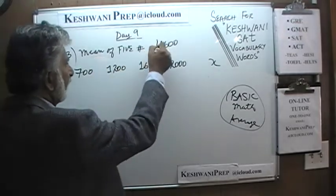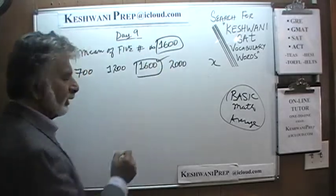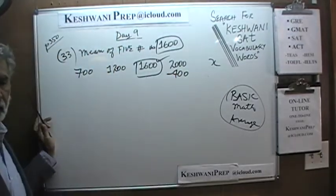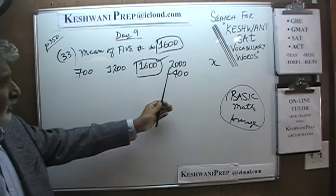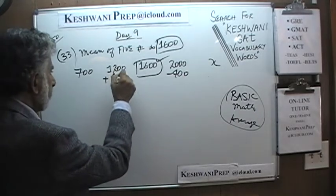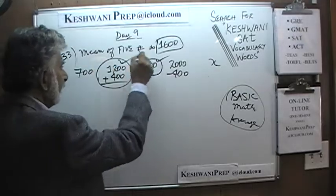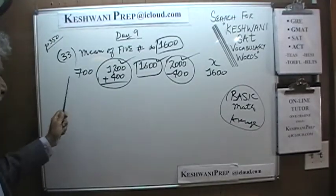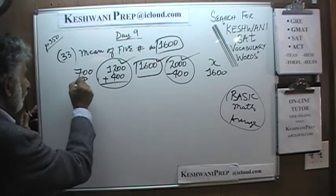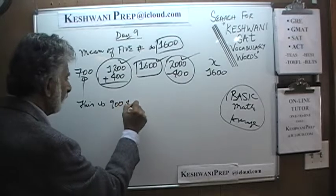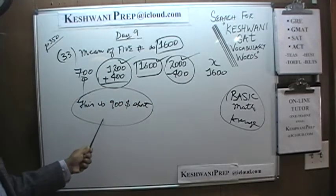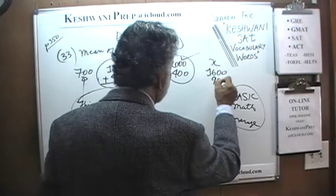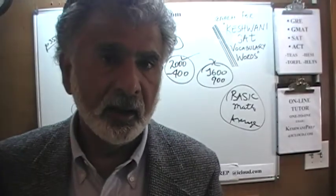Think of this in terms of money — we want everybody to have 1600 dollars. This number already has 1600. The number 2000 has 400 dollars more — let's take it away and give it to 1200, making that 1600 too. Now we find that 700 is 900 dollars short. Somebody has to make up for that shortfall, and that's X. So X needs to be 1600 plus 900 — hence X is 2500.